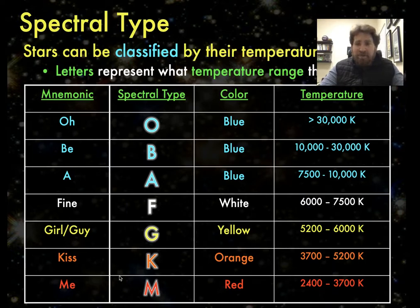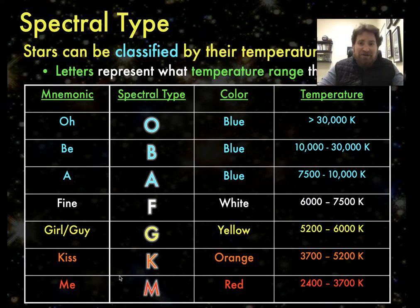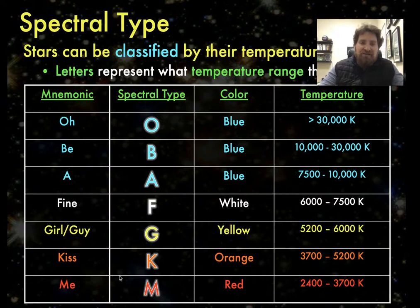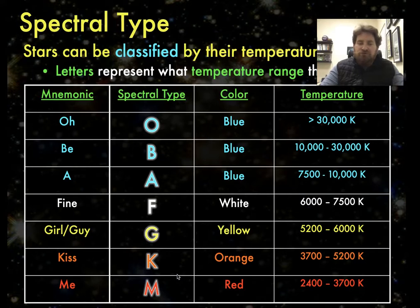I've also heard, oh big and furry gorilla kill me, which is a little morbid but perhaps sticks in your mind a little bit better. I'll leave it to you to come up with your own mnemonic, but essentially O, B, and A class stars are among the hottest. F and G class stars are sort of medium temperature stars. And K and M class stars are the cooler stars that appear more orangish red in the sky.